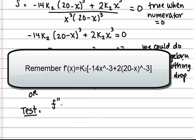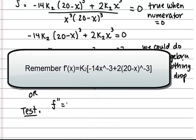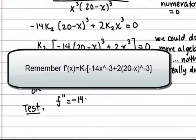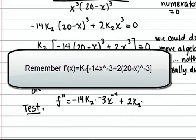The other option is we could do a second derivative test to be able to look at the concavity of the curve. So f double prime is going to be negative 14 times k sub 2 times negative 3 x to the negative 4 plus 2 times k sub 2 times negative 3 times 20 minus x raised to negative 4 times the derivative of what's inside, which would be negative 1. And I'll factor out k sub 2 and x to the 4th in the bottom there.